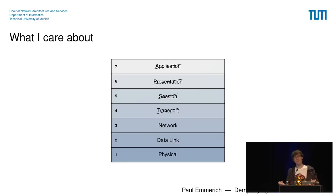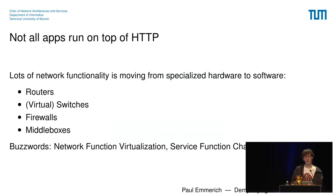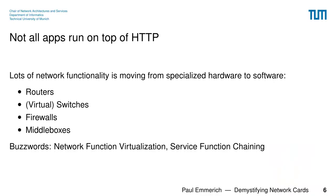You might wonder whether there's anything interesting in these lower layers, because people nowadays think everything runs on top of HTTP. But not all applications run on top of HTTP — there is a lot of software that needs to run at these lower levels. In recent years, there's a trend of moving network infrastructure from specialized hardware black boxes to open software boxes. Examples are routers, switches, firewalls, middleboxes. The relevant buzzword is network function virtualization.